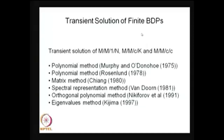There are many literature sources on the transient solution of a finite birth-death process, starting with Murphy and O'Donoghue, who used the polynomial method. In 1978, Rosenlund also found the transient solution using different polynomial methods. Cheong in 1980 used a matrix method, and later Van Doorn gave the solution using spectral representation. Ekeferov et al. (1991) used orthogonal polynomials, and Kijima also gave the solution using eigenvalue methods.